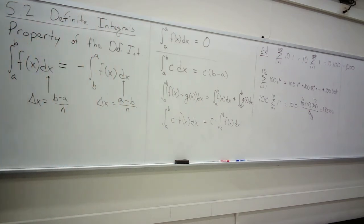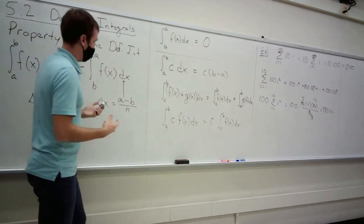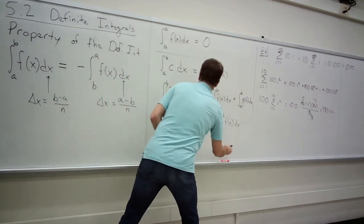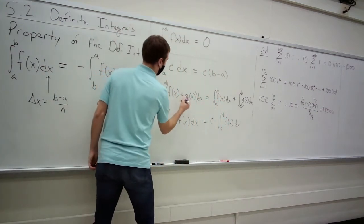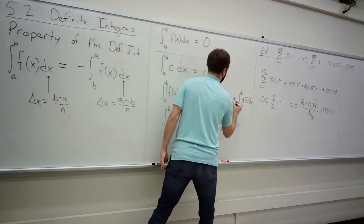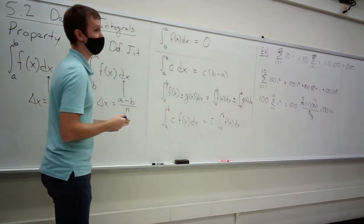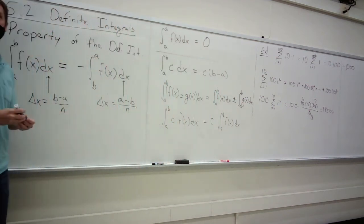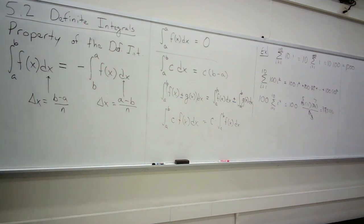The last property: the integral of [f(x) − g(x)] equals the integral of f(x) minus the integral of g(x). That's the final property of integrals — differences inside the integral can be split into the difference of two integrals.